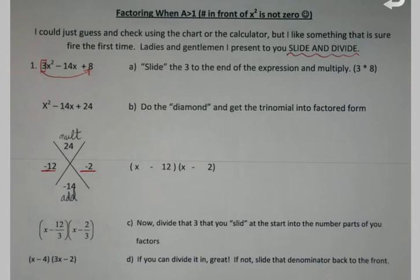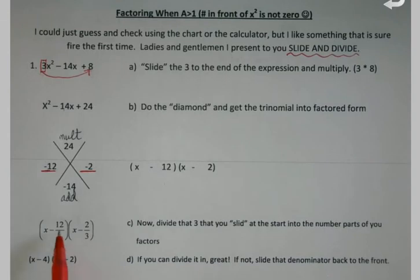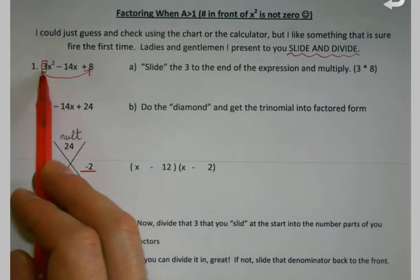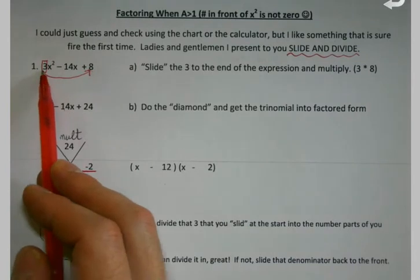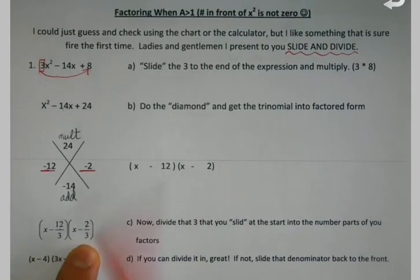My last job, once I get this into place, is to take the number parts that I got, the 12 and the 2, and divide them by what? The 3 that I slid at the beginning. So I took the 12, divided it by 3. I took the 2, divided it by 3.